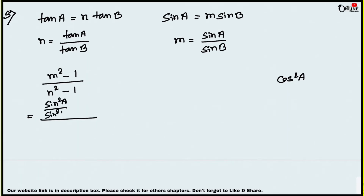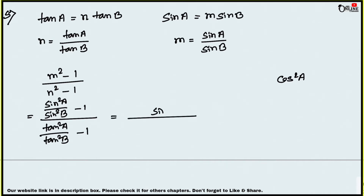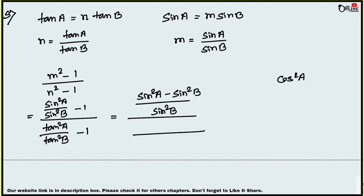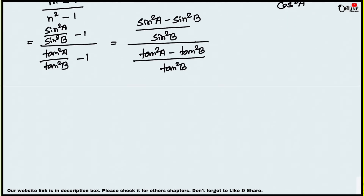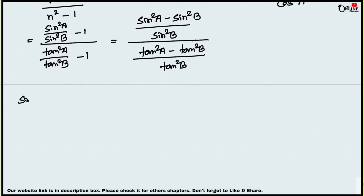So m² - 1 = sin²a/sin²b - 1 and n² - 1 = tan²a/tan²b - 1. With common denominators: m² - 1 = (sin²a - sin²b)/sin²b and n² - 1 = (tan²a - tan²b)/tan²b. Recall that tan²a = sin²a/cos²a and tan²b = sin²b/cos²b.